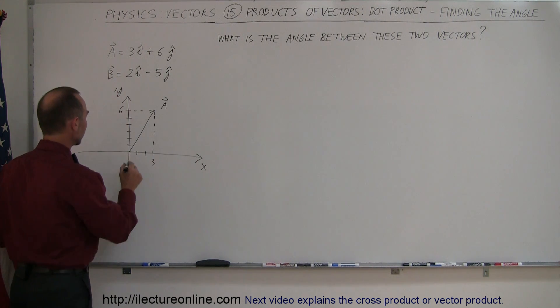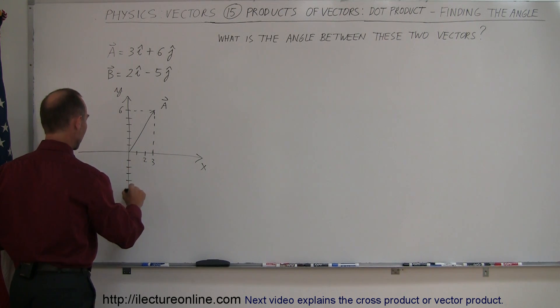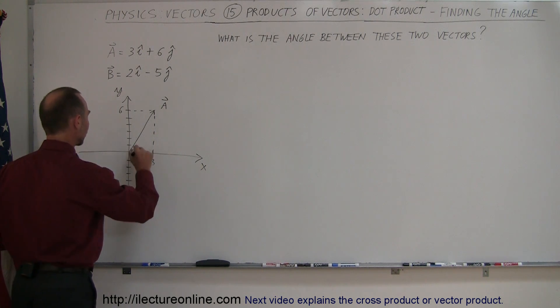Vector B is 2 in the x-direction, 1, 2, and 5, negative 5 in the y-direction, 1, 2, 3, 4, 5. That's negative 5. And where these two come together, there's vector B, like so. And of course, we're looking for the angle between them. Let's call that theta.